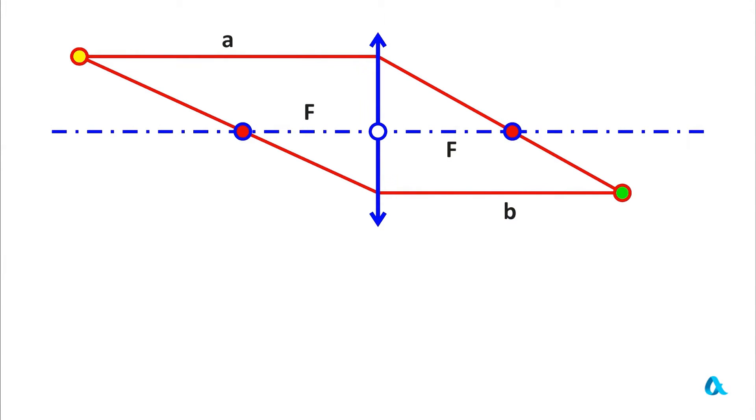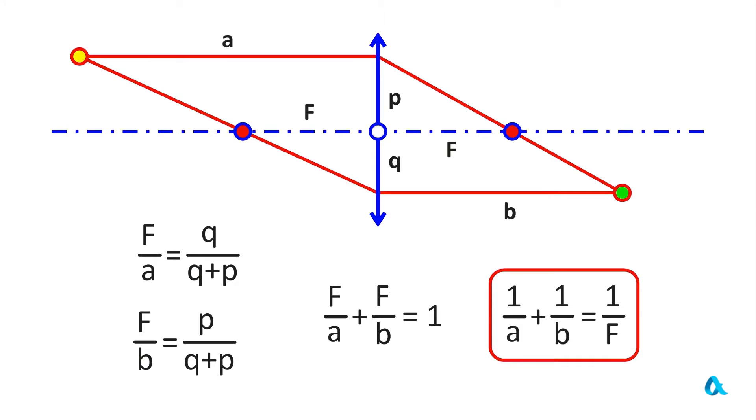Let's denote the focal length as F and the distances to the object and image as A and B respectively. Let's introduce two extra segments and denote them with the letters P and K. Let's take two similar triangles on the left and create a proportion where F is to A as K is to P plus K. Now let's consider two similar triangles on the right side and form the second proportion. F is to B as P is to the sum of P and K. Let us combine these two equations and we will obtain that the division of F by A plus the division of F by B is equal to 1. This outcome is generally represented as the reciprocal of A added to the reciprocal of B is equal to the reciprocal of F. This formula is referred to as the formula of a thin lens.